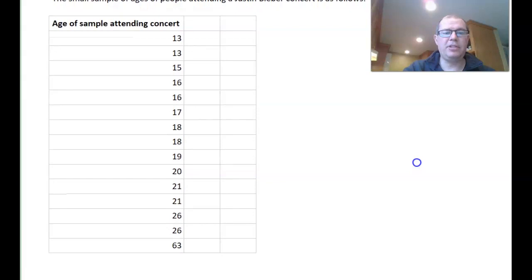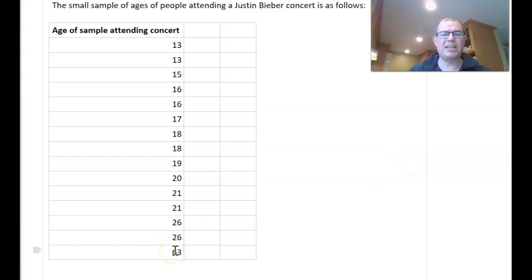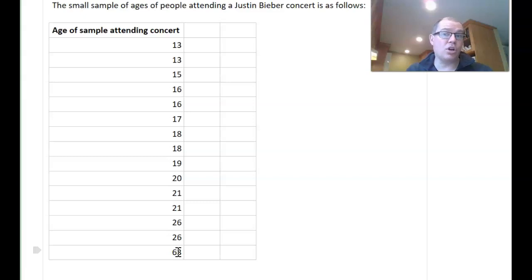Have a look at the data. Is anything surprising to you? Hopefully you're looking at this number, this 63. I think it's pretty obvious that this probably is an outlier. Now consider: what would I change this number to so you would not consider it an outlier?